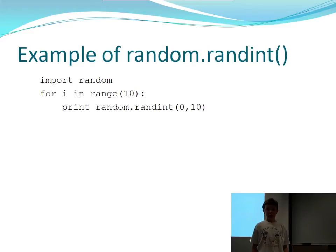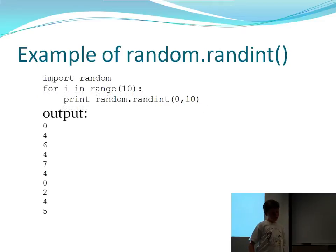An example of random.randint goes like this. First you import random up there, and then you loop 10 times and you just print random numbers between 0 and 10. And you come up with an output that might look something like this.